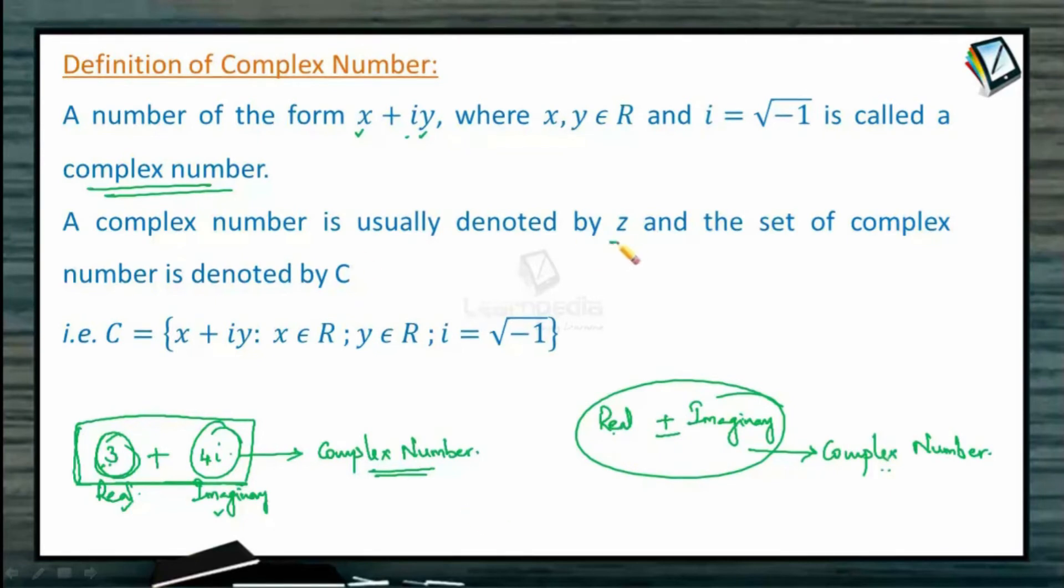And it is usually denoted by z, as we denote the real numbers by x, y, or small a, small b like this. Now the complex numbers are usually denoted by z and the set of complex numbers is denoted by capital C.